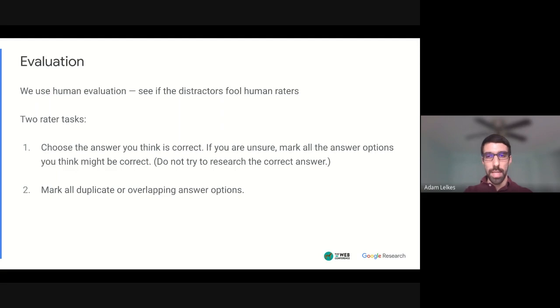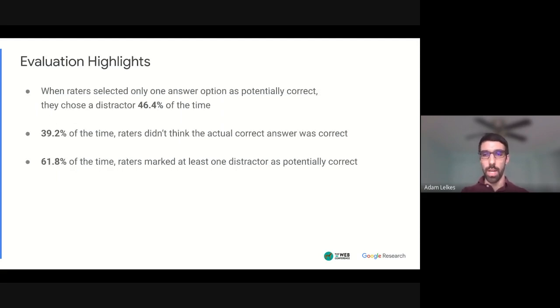And the results show that we do manage to fool users quite often and achieve the intended difficulty. So there are multiple ways of measuring the success, mostly due to the fact that we ask raters to mark all answer options that might be correct if they're not sure of the single correct answer, but when raters were sure enough to only mark one answer option as correct, they actually got it wrong 46 percent of the time. 46 percent of the time they chose a distractor instead of the correct answer when they only marked one answer option.